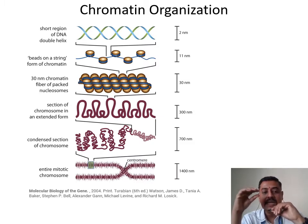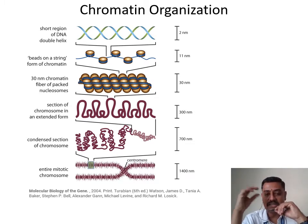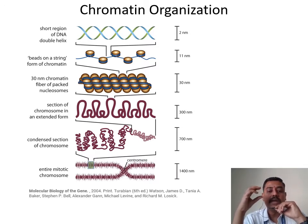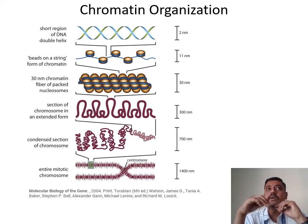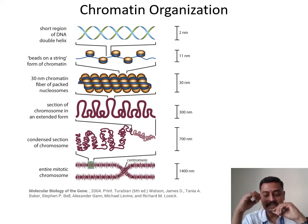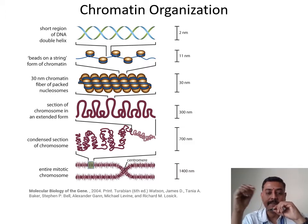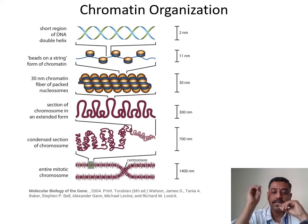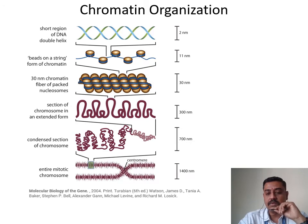Further compaction produces 300 nanometer fibers, analogous to an old-fashioned telephone cord with some regions extended and others short in range. Additional winding generates solenoid fibers or condensed chromosome sections of 700 nanometers. This is what you observe in the metaphase chromosomes of mitosis, ultimately forming a chromosome of around 1400 nanometers containing all these solenoid fibers.